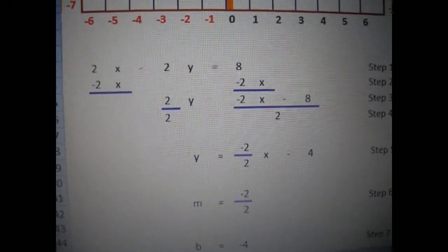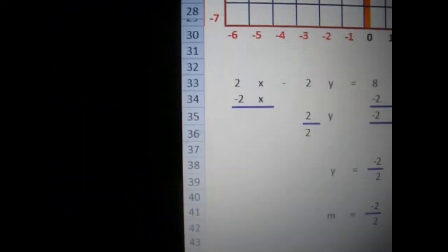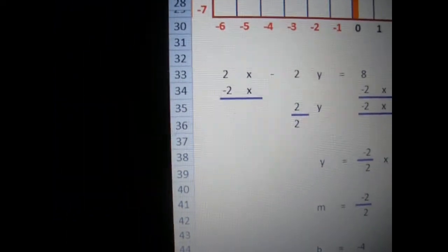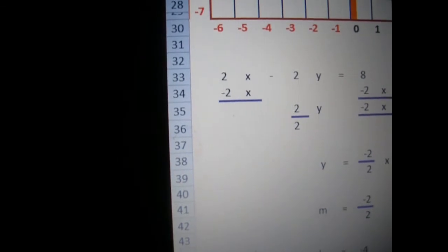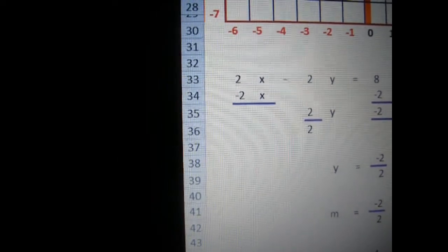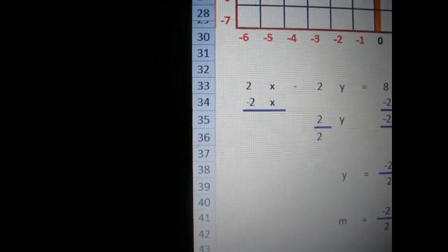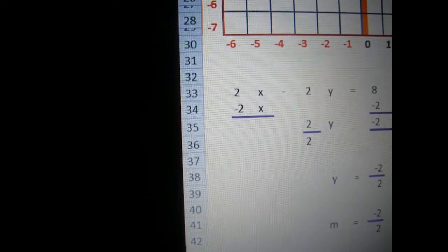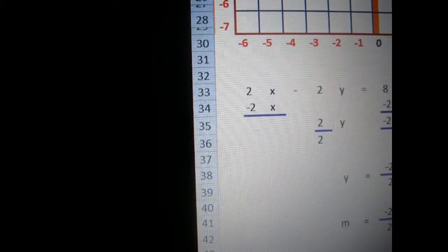2x minus 2y equals eight. We need to get rid of the 2x so that we're left with the y. So the first thing we do is we need to subtract 2x from both sides. Here, we've done that to get rid of the 2x.